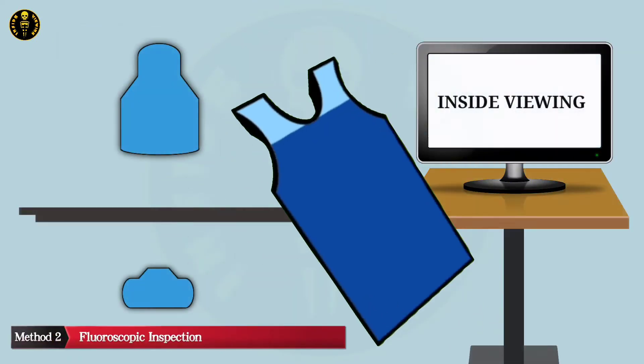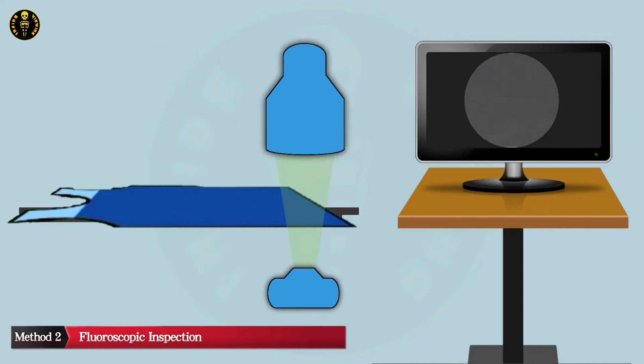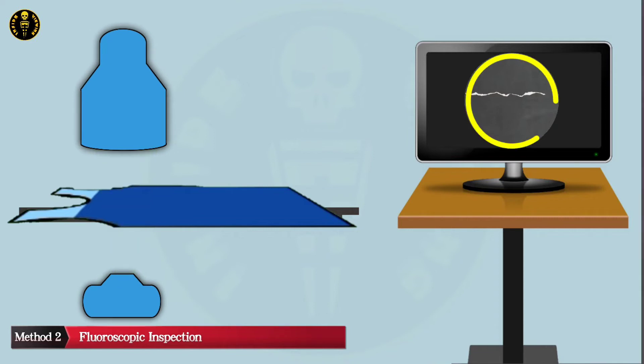For fluoroscopic inspection, lay out the apron on the fluoroscopy table and inspect the entire area fluoroscopically by applying high kVp and low mAs.